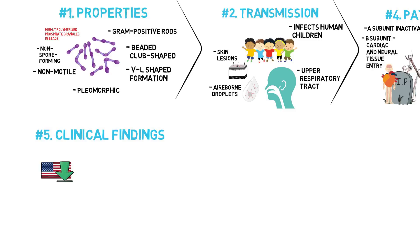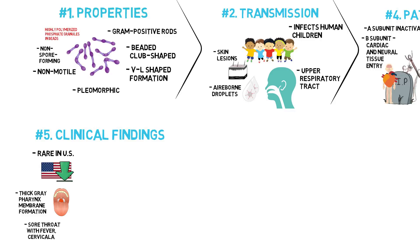Clinical findings. Diphtheria is rare in the United States. Its most prominent sign is a thick gray membrane over the tonsils and throat. Other signs include fever, sore throat, and cervical adenopathy.